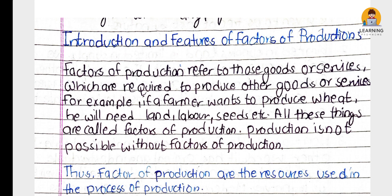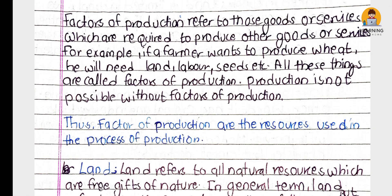Factor of production means the raw material or goods or services needed in production. For example, if a farmer wants to produce wheat, he will need land, labor, seed, etc. All these things are called factor of production. Thus, factors of production are the resources used in the process of production.